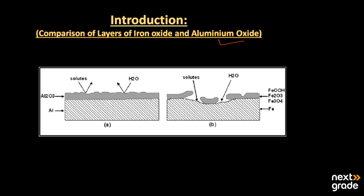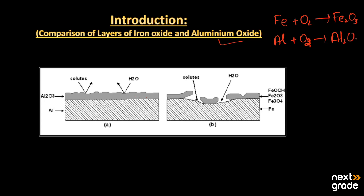When these two metals come in contact with oxygen they form their oxides. When iron comes in contact with oxygen it forms Fe2O3. On the other hand, when aluminum comes in contact with oxygen it makes Al2O3, which is called aluminum oxide.